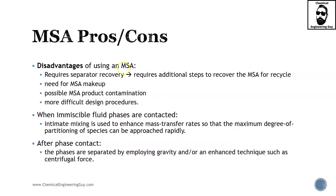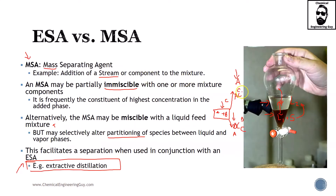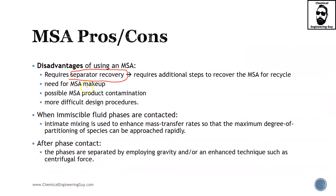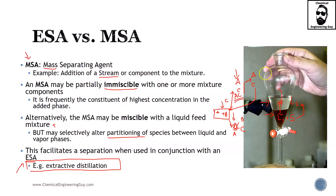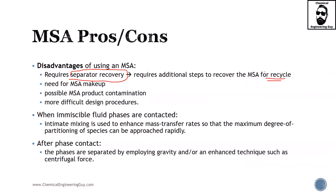The main disadvantage of MSA is that you will need further processing. Once you get A+C and B+C, you will need to spend additional investment capital on a second process to separate A from C, recover C, and send it back. MSA requires additional steps to recover the mass separating agent for recycling — because you don't want to waste it, and even if you did, you still need to purify product A, so MSA recovery cannot be avoided.